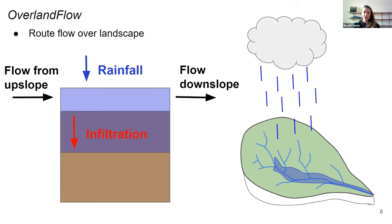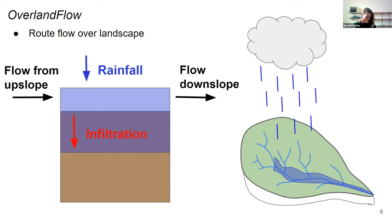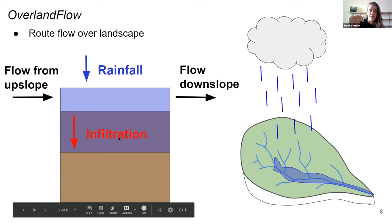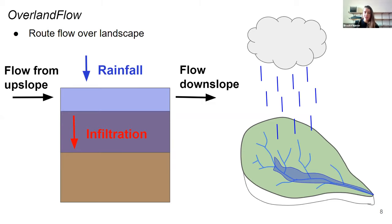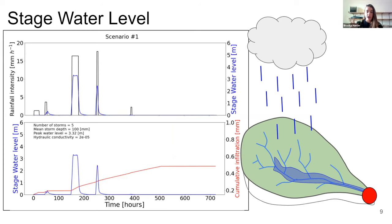After the infiltration step, surface water is fed into the overland flow component, which routes flow over the landscape. The surface water depth in each cell is a function of two inputs — rainfall and flow from upslope — and two outputs — infiltration and flow downslope over the time series. The cumulative infiltration over the entire time series is one place where a student could try to incorporate an evapotranspiration piece and expand upon the notebook.